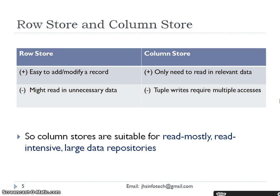Row store is easy to add or modify a record but might read in unnecessary data. Column store only needs to read in relevant data, but tuple writes require multiple accesses. Column stores are suitable for read-mostly, read-intensive large data repositories. When we have huge data to be read, we use column store. But when we want to add or modify records on a regular basis, we always prefer row storage.